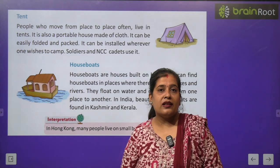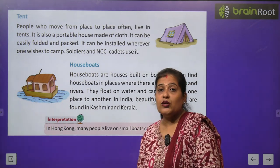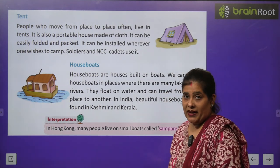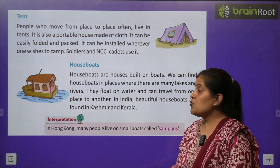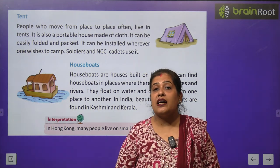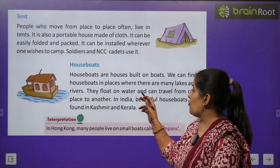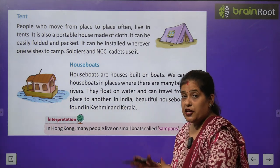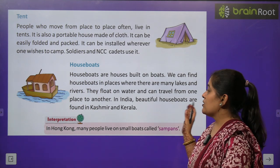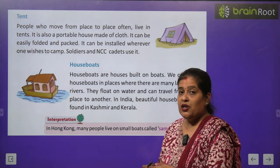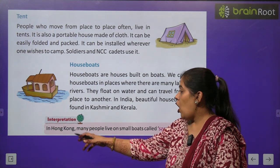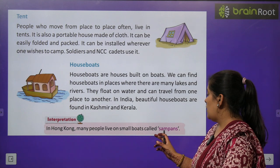Now we will learn about houseboats. Houseboat mostly कश्मीर में — जम्मू-कश्मीर में — देखने को मिलती है. Houseboats are houses built on boats. We can find houseboats in places where there are many lakes and rivers. वहाँ देखने को मिलती हैं जहाँ पर बहुत सारी झीलें और नदियाँ पाई जाती हैं. They float on water and can travel from one place to another. In India, beautiful houseboats are found in Kashmir and Kerala. Now for an interesting fact: in Hong Kong, many people live on small boats called sampans.